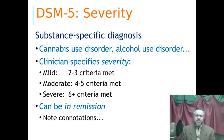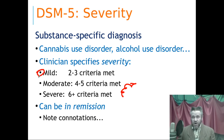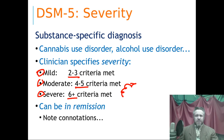The DSM-5 asks you to specify the severity of the disorder: mild, moderate, or severe, indicated by the number of criteria met. Two to three is mild, four to five is moderate, and six or more is severe. There is ongoing discussion about whether this system could be modified, but so far it seems to work fairly well. Once you have a substance use disorder according to the DSM, you always have it — the DSM doesn't use the word 'addiction,' but once you are 'dependent,' you are always dependent.